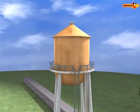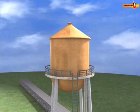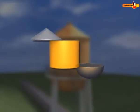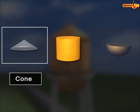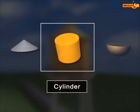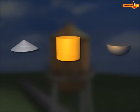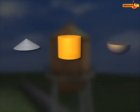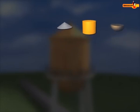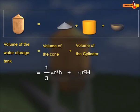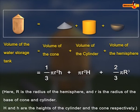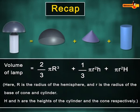Similarly, we can find the volume of this water storage tank, which is a combination of a cone, a cylinder, and a hemisphere. Thus, volume of water storage tank is equal to the sum of volumes of a cone, a cylinder, and a hemisphere.